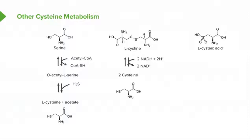The last way of making cysteine starts with an oxidized form of cysteine known as cysteic acid. Cysteine is fairly readily oxidized, so it's not uncommon that cells will have L-cysteic acid within them. To make cysteine from that simply involves a reduction, and that reduction involves hydrogen sulfide, as we can see here. In the process, the sulfur is donated to the cysteic acid, the sulfite — which was the oxidized sulfur — is released, and cysteine is produced.